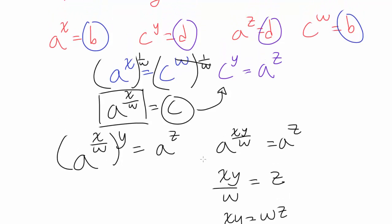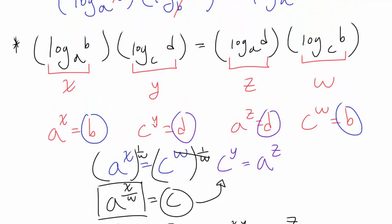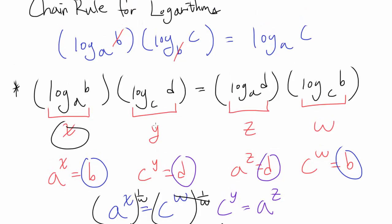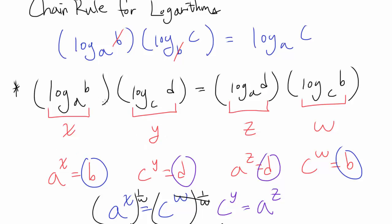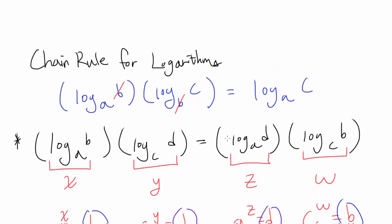What is this? We just proved xy equals wz, and that's what we wanted to prove. We wanted to prove x times y was equal to w times z. So we just proved this formula: log base A of B times log base C of D equals log base A of D times log base C of B.